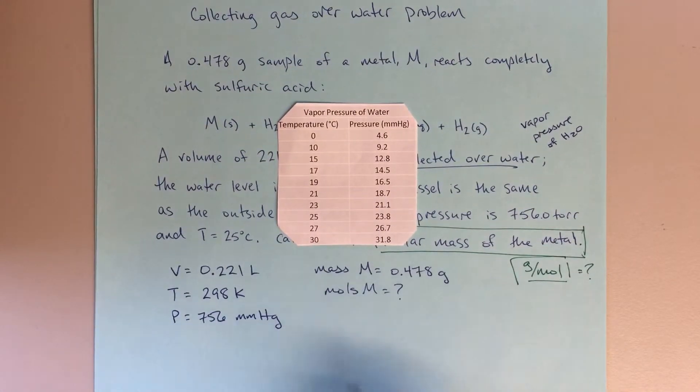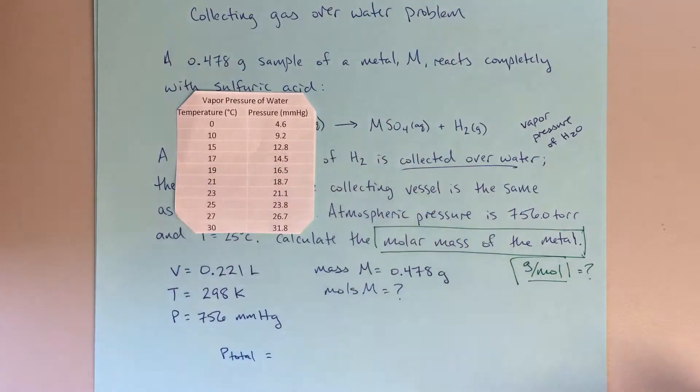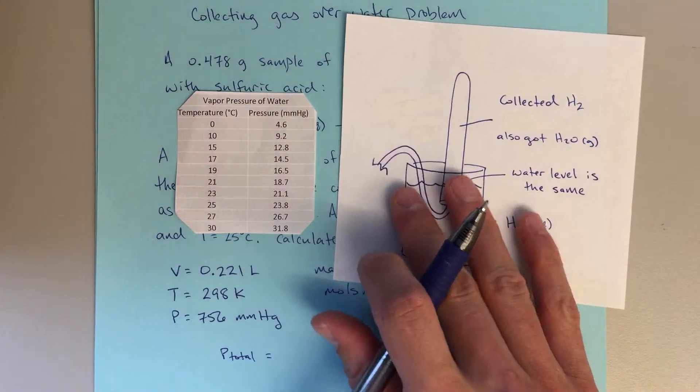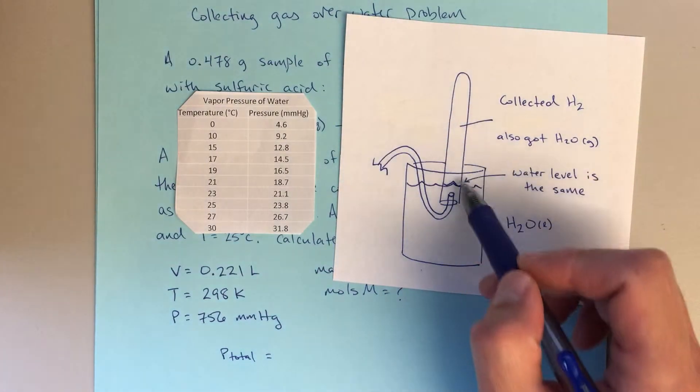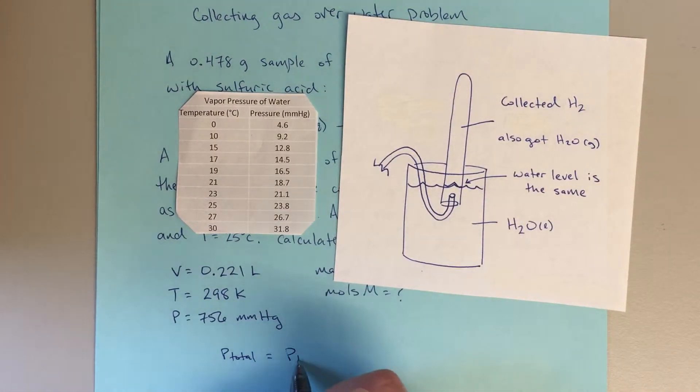So the way that I'm going to utilize that information is I'm going to say P total inside of the gas collection tube. So maybe we'll put this up here so we can follow along with what we're doing. So P total inside the gas collection tube. That's going to be the pressure of H2 gas plus the pressure of H2O gas.